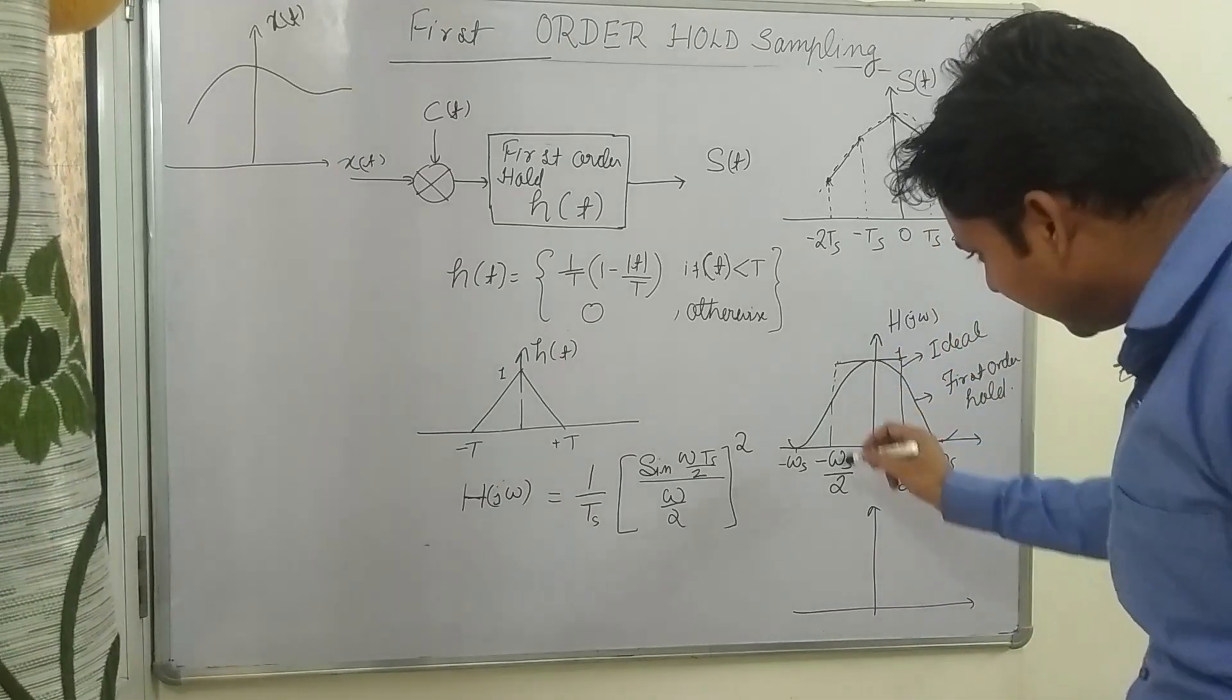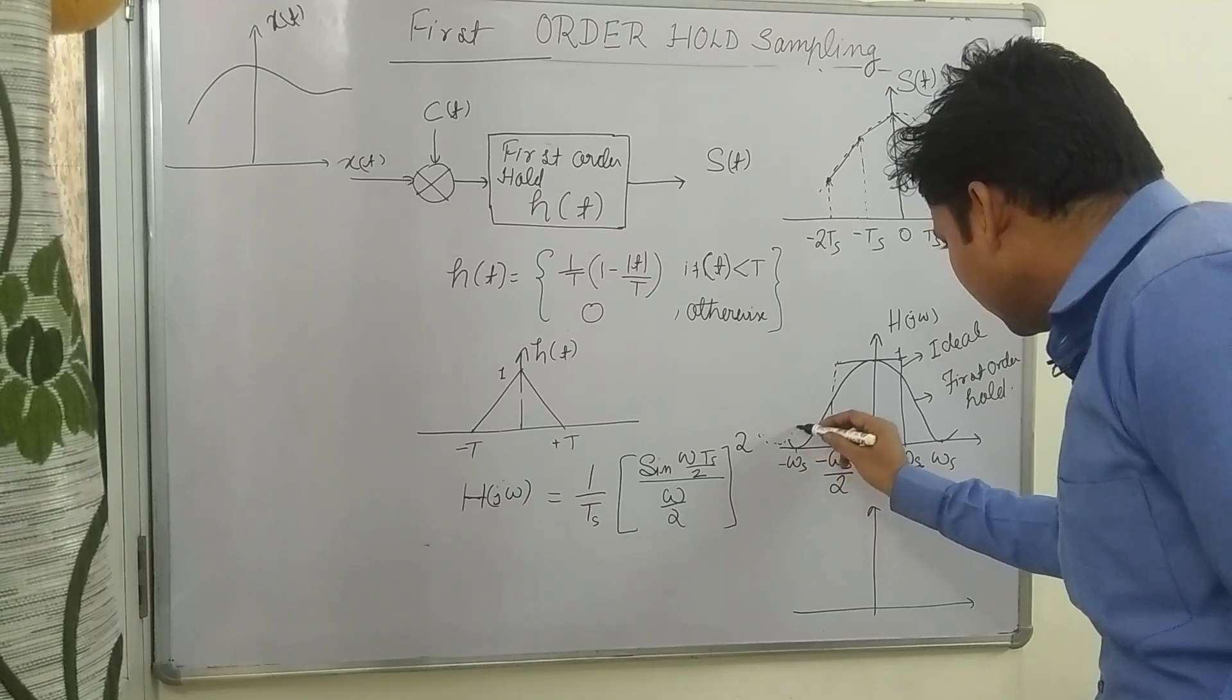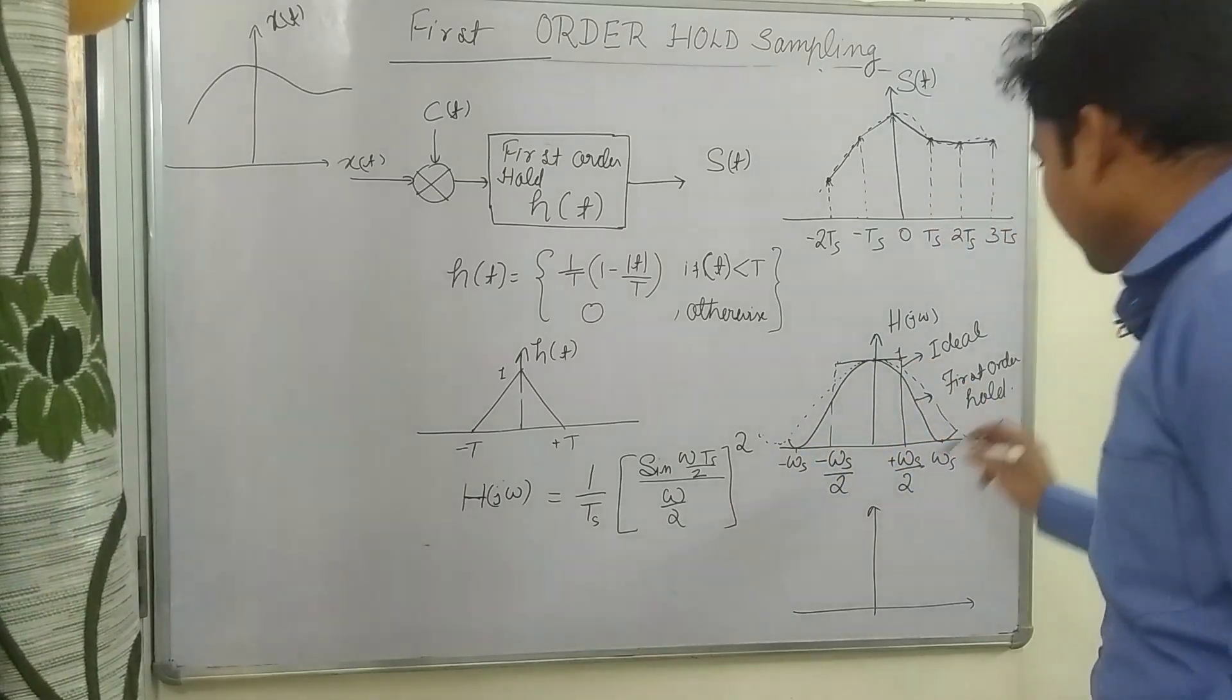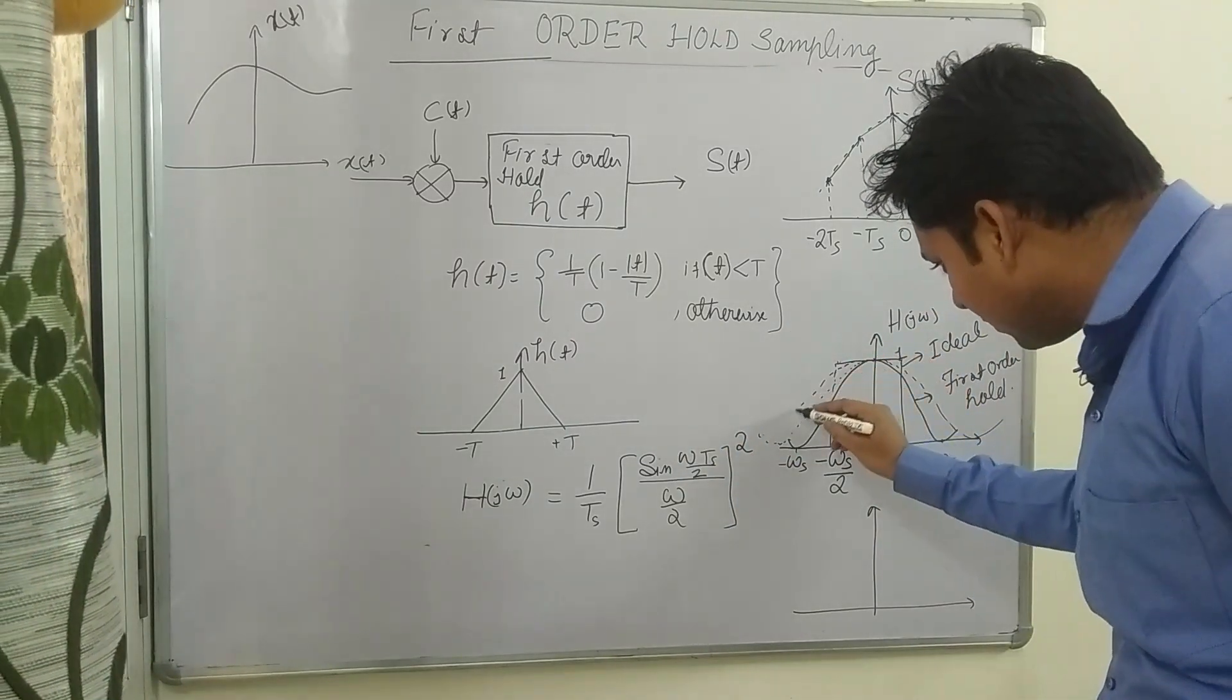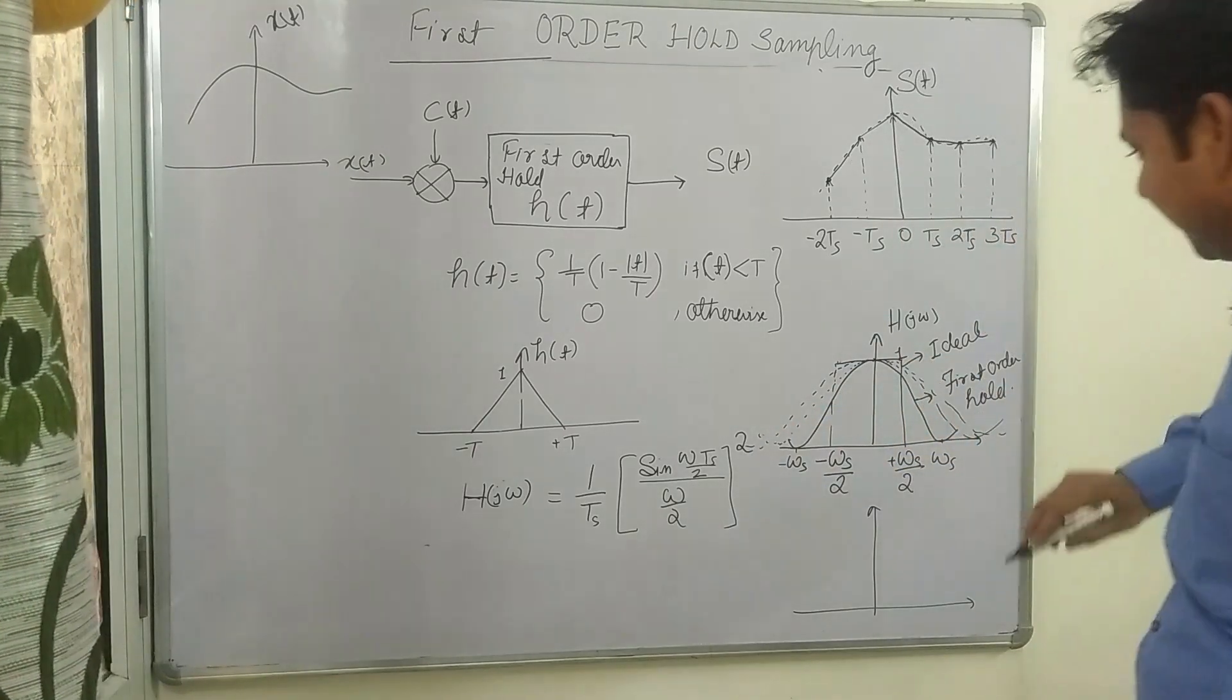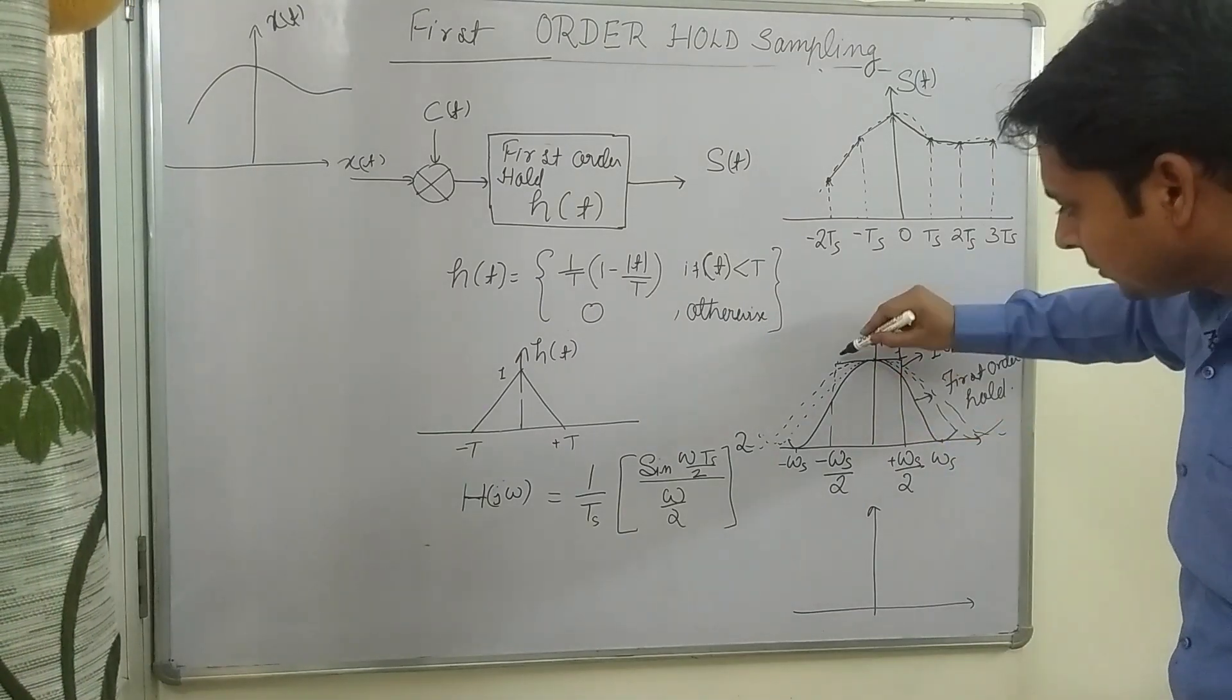Now here I will compare it. So it will become like this, and as we increase the order it will become more and more smooth. You can see here as it is becoming smooth, it is tending to the ideal transfer function.